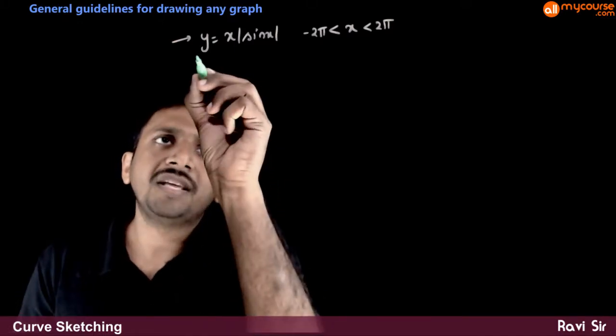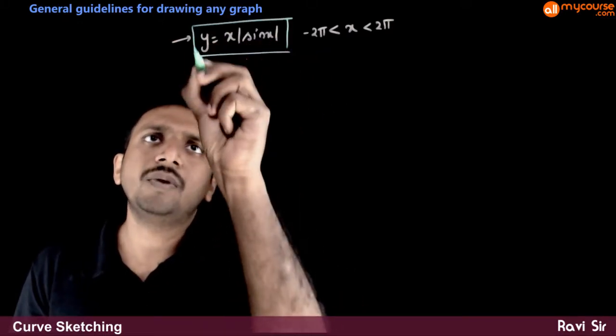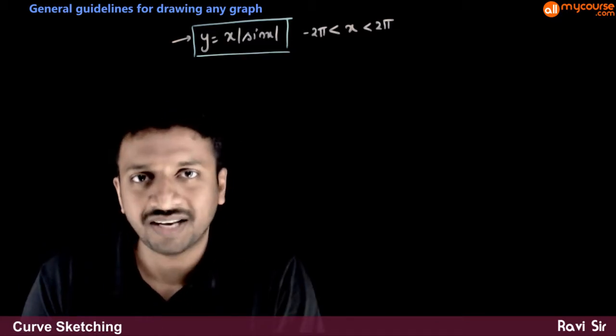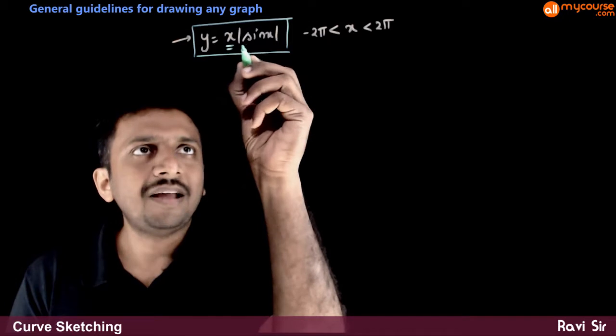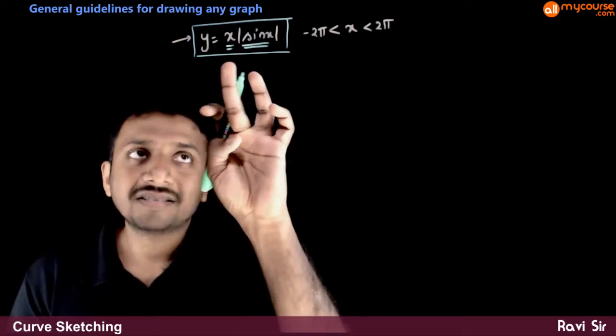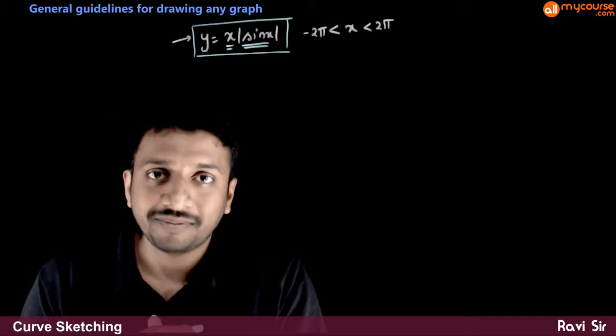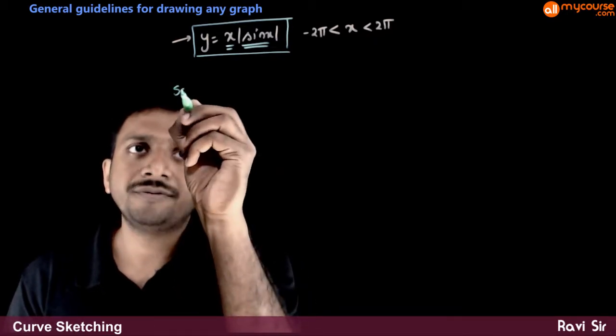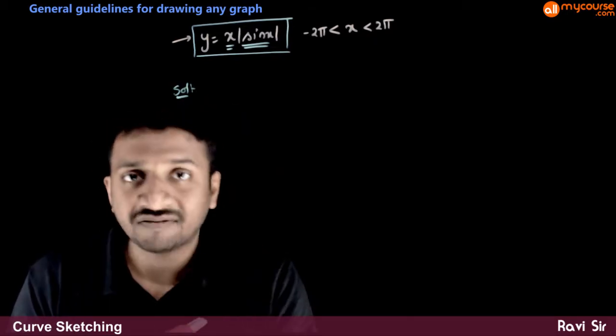In this question, you are asked to draw the curve y equals x into mod of sin x. So here you are asked to multiply two functions. x and sin x have to be multiplied. So let us look at how we multiply the graphs of two functions.